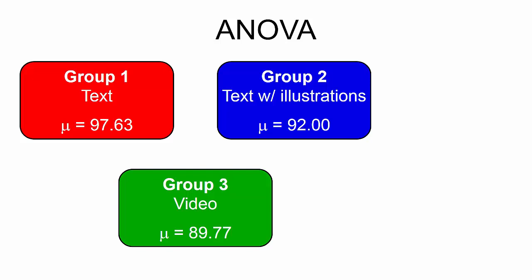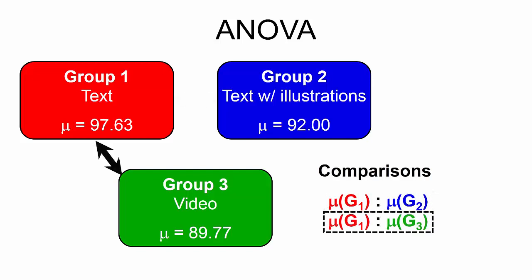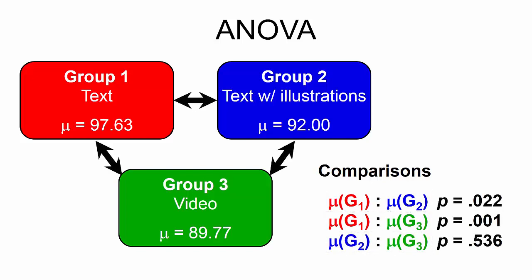The ANOVA test will compare the groups to each other and calculate a p-value for each pair of groups. In this three-group example, it will compare Group 1 to Group 2, Group 1 to Group 3, and Group 2 to Group 3. If the p-value is less than or equal to .05, we would conclude that one group statistically significantly outperformed the other.